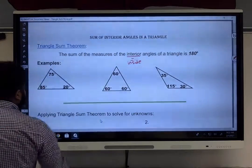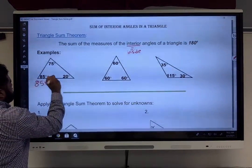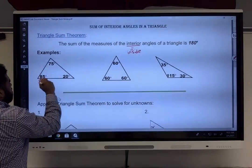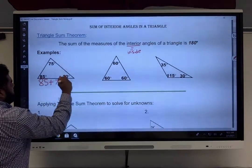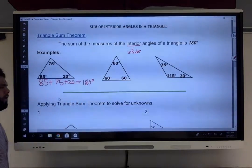So like, for example, right here, 85 plus 75 plus 20 equals 180 degrees.